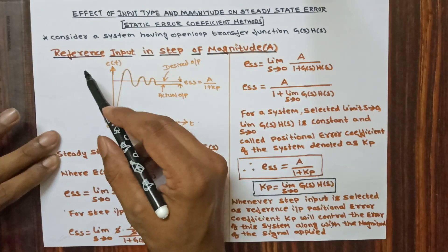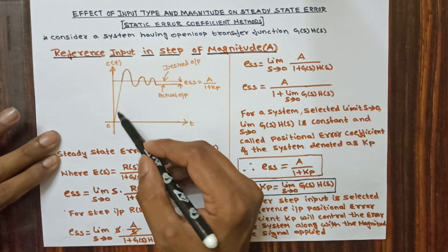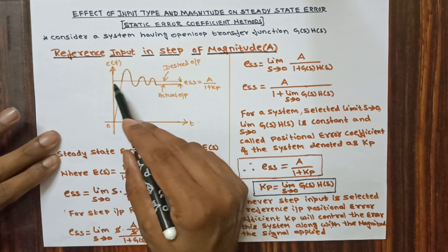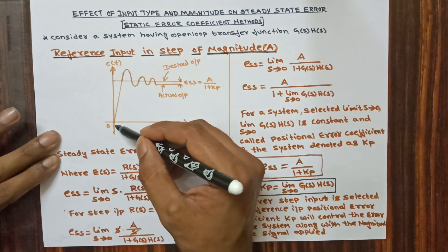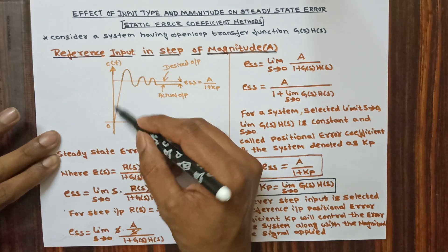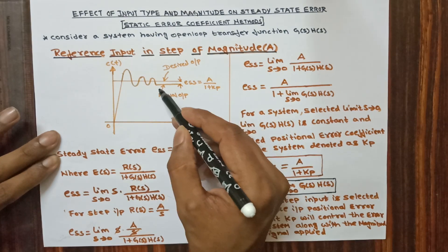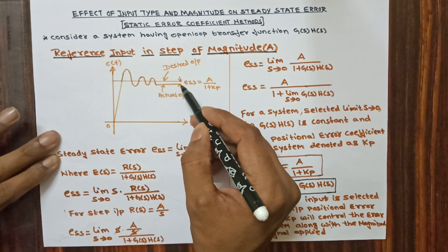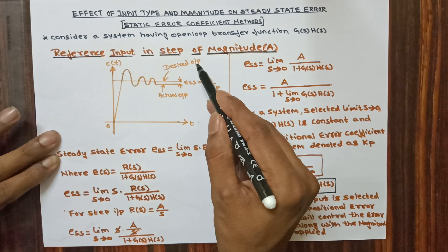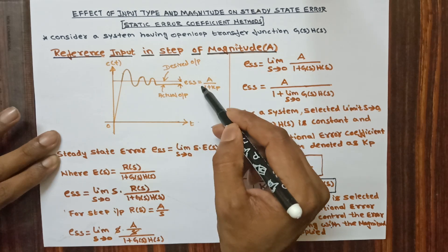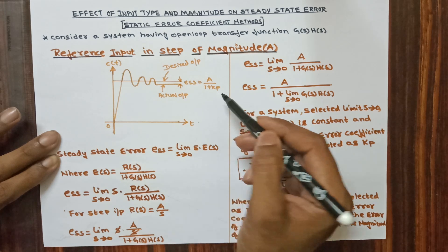Let us see first the reference input as a step of magnitude A. You can see the step response which is considered here as a desired output signal, and you can see the output — after passing through a transient period it reaches to a steady state response. The steady state error is the difference between desired output and actual output, which is given by ESS is equivalent to A divided by 1 plus Kp.